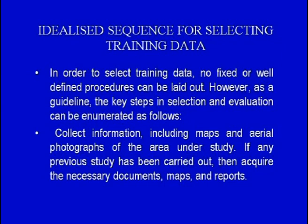Now let us look at the idealized sequence for selecting training data. No fixed procedures can be laid out, but as a guideline, key steps are as follows. First, collect information including maps and aerial photographs of the area under study; acquire any previous study documents, maps, and reports. Second, conduct field trips to acquire first-hand knowledge of selective and representative areas in the study area.